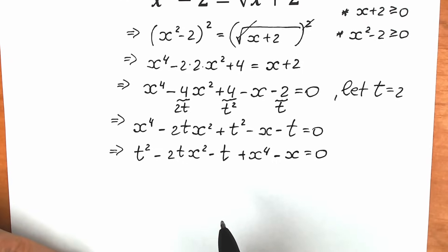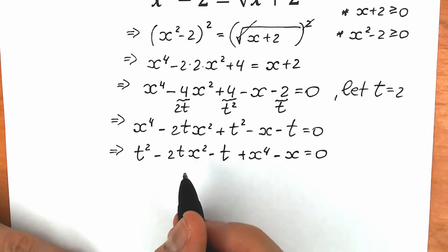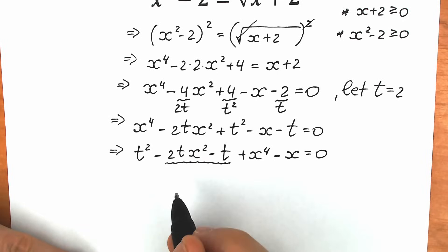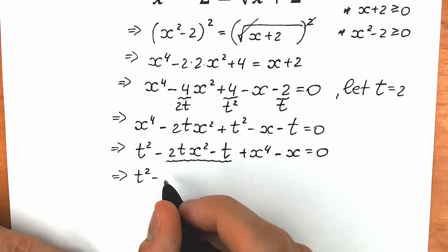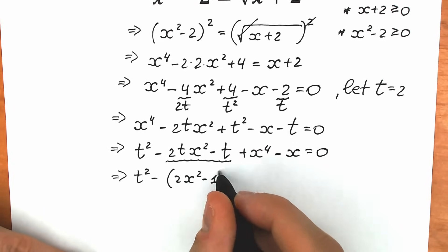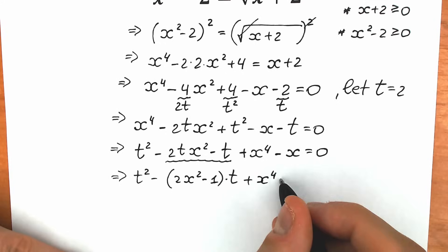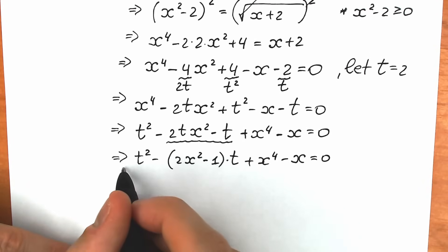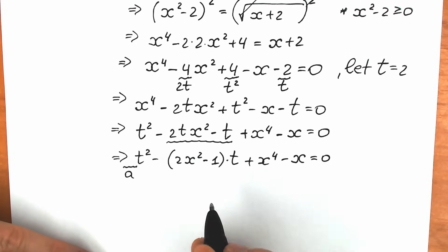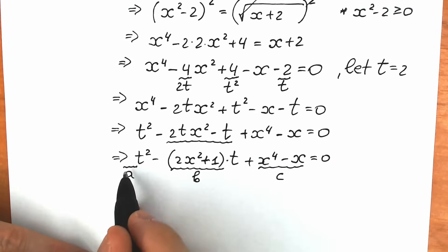If you look closely, this is a basic quadratic equation in t. We have coefficient a equal to 1, coefficient b equal to minus (2x squared plus 1), and coefficient c equal to x to the fourth power minus x. Let's solve this quadratic equation in terms of t by first finding the discriminant.